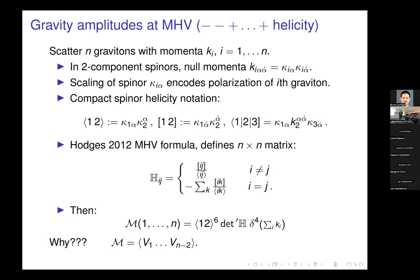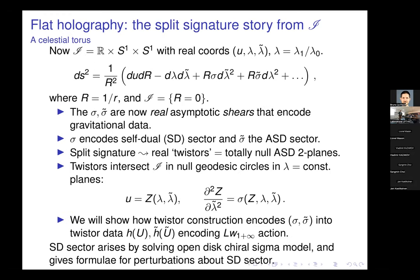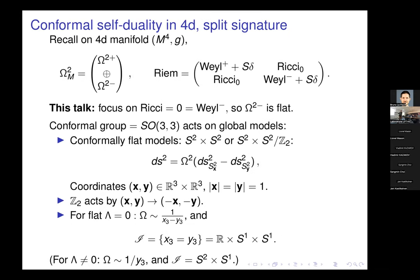Now I'm going to move on to a discussion of what happens when we take sigma-tilde equal to zero — dealing with a purely self-dual metric and how twisters encode that. In four dimensions the two-forms split into self-dual and anti-self-dual parts, and under that the Weyl tensor splits into self-dual and anti-self-dual parts. We're going to focus on the situation where the Ricci tensor and the anti-self-dual Weyl tensor vanish, making it self-dual, giving flatness of the anti-self-dual two-forms.